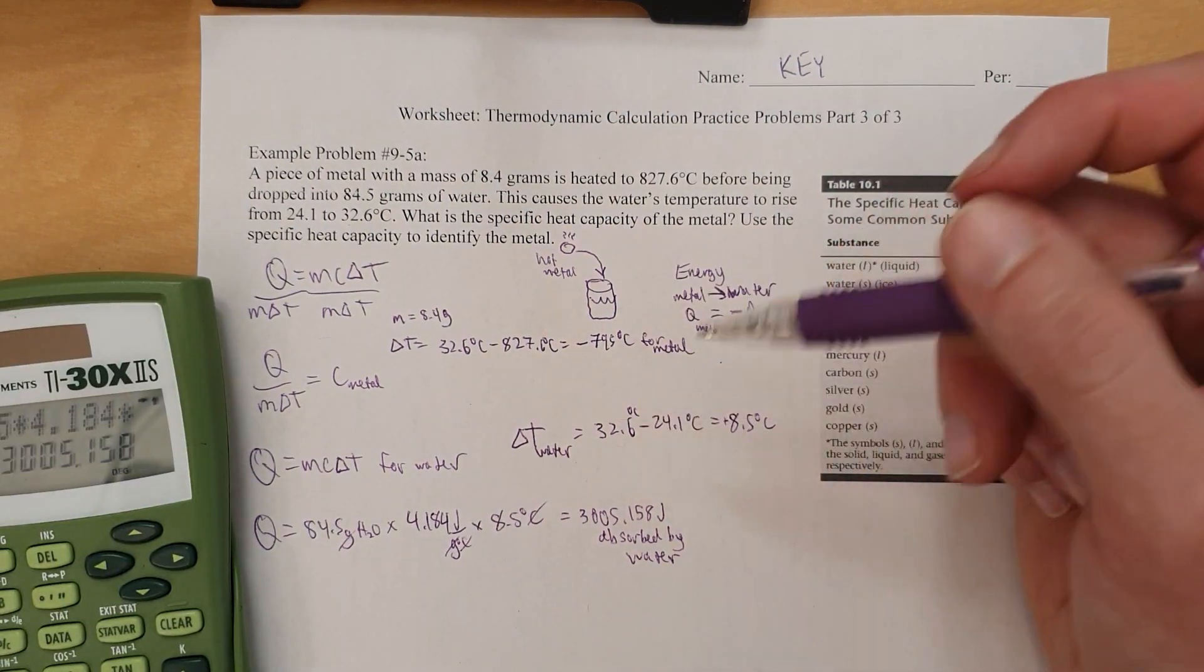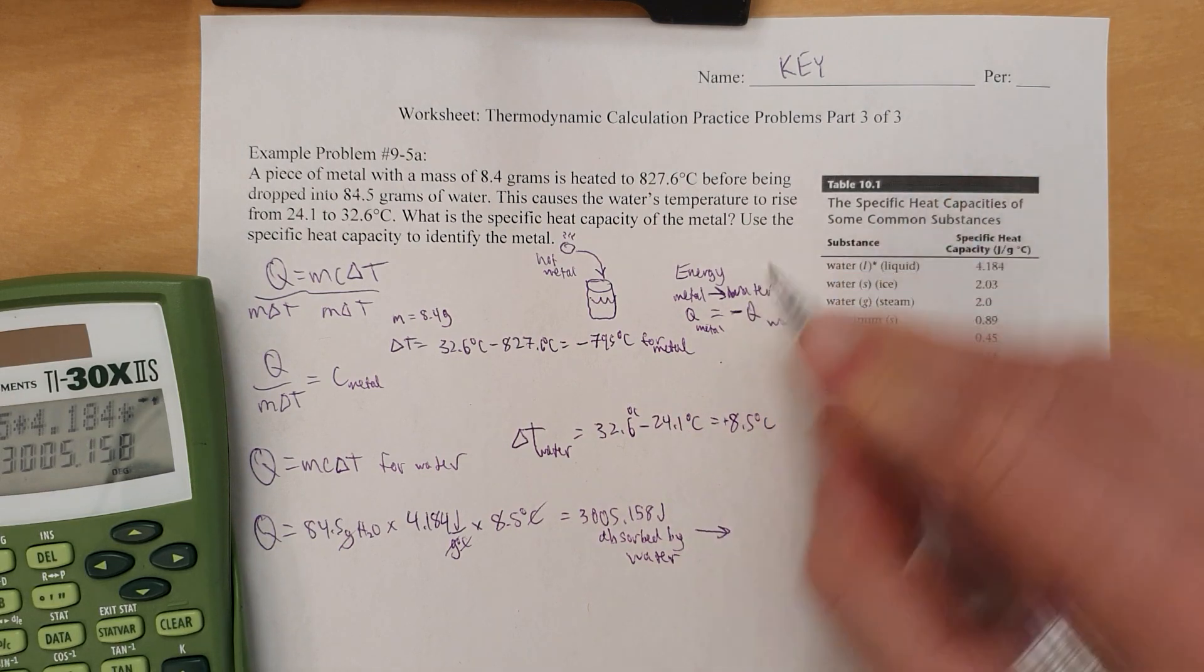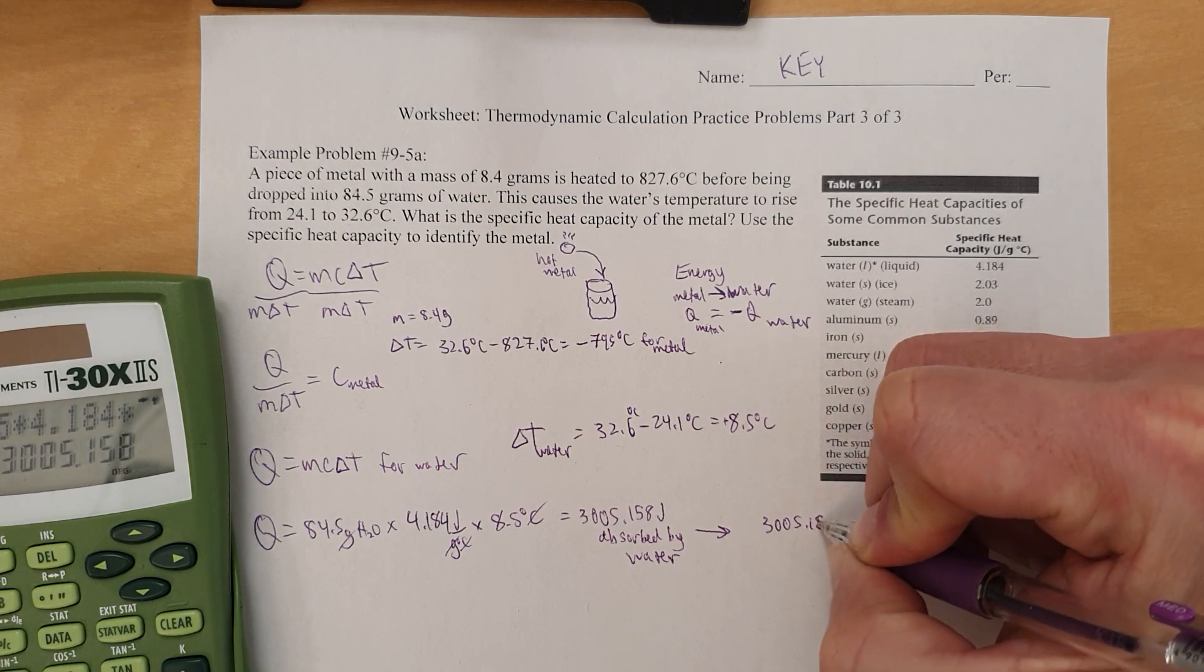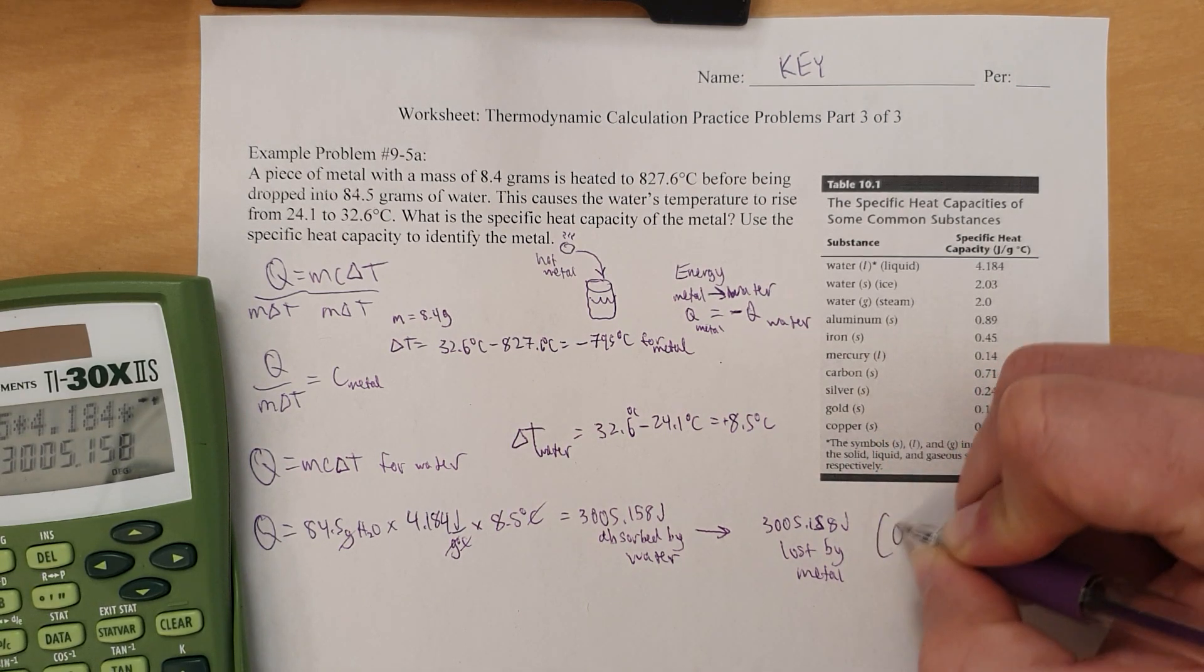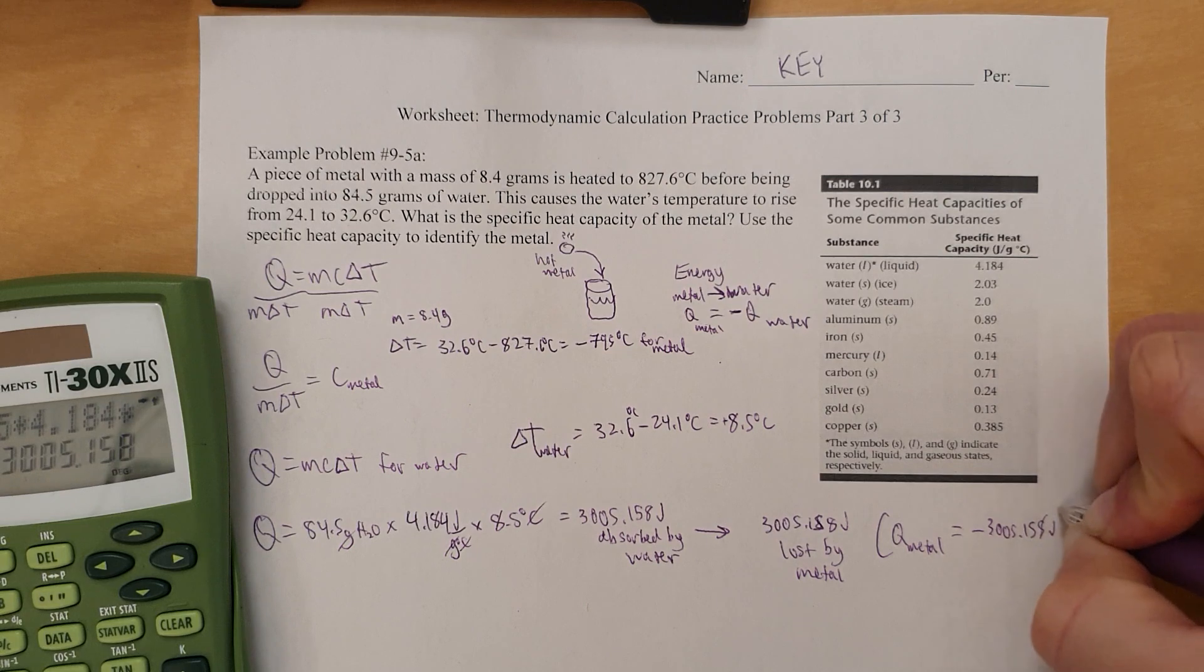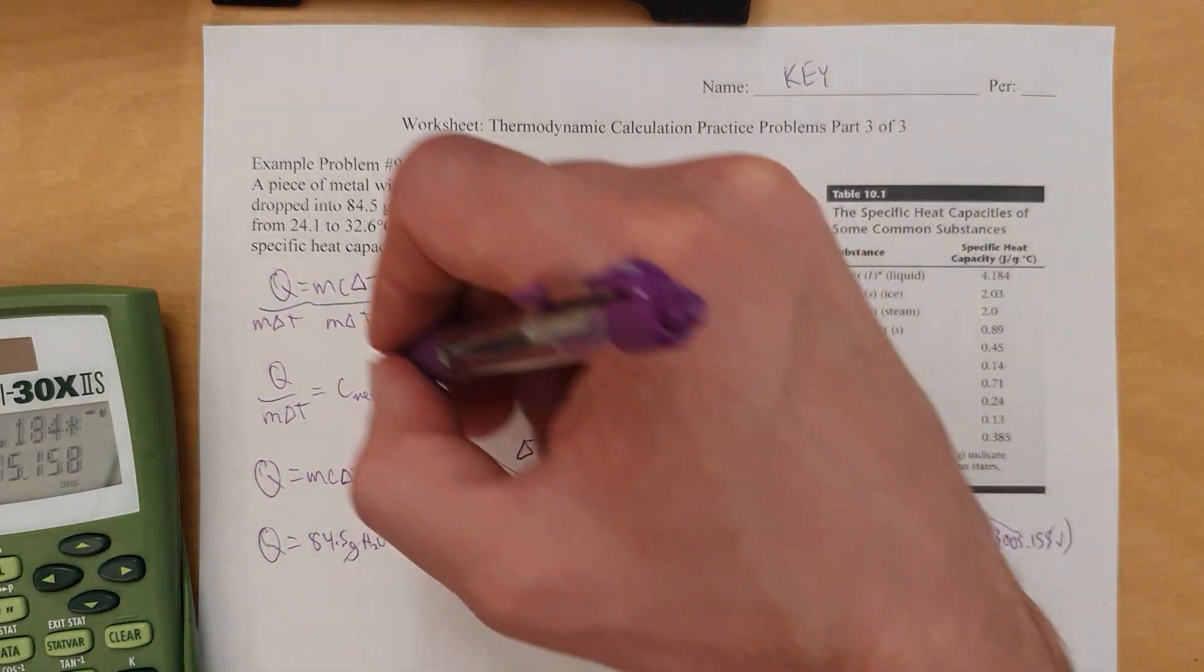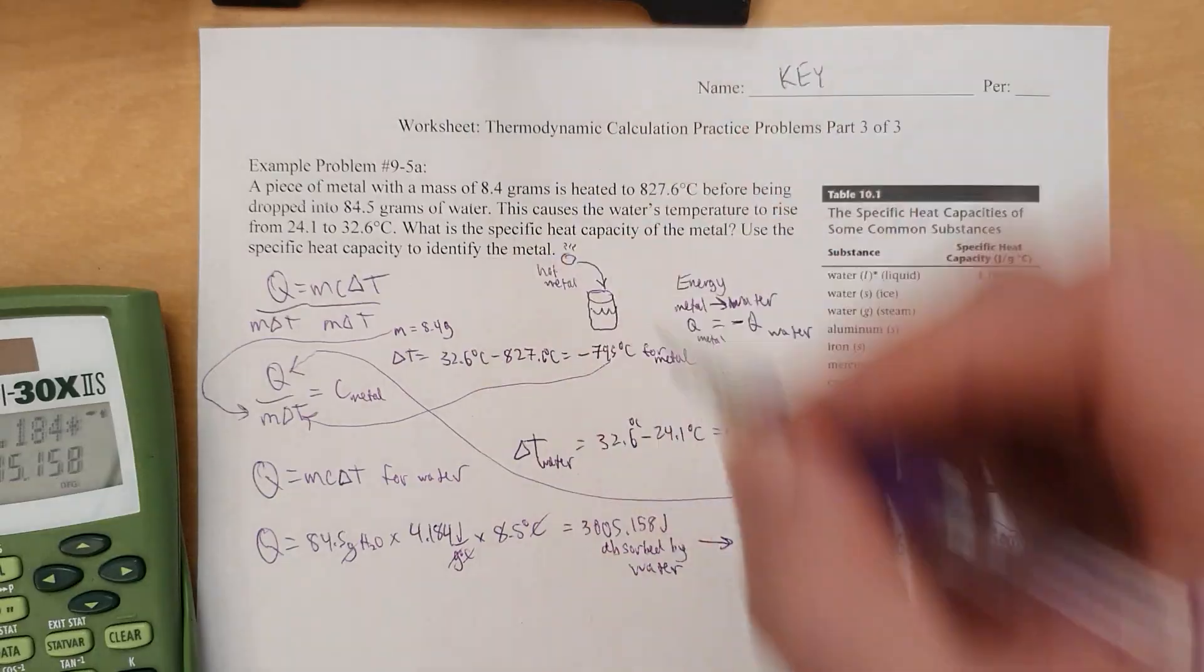Now, we need to understand that if this many joules is absorbed by the water, then the exact same number of joules must have been lost by the reaction, by the metal. So, the only way the water gained this many joules is because 3,005.158 joules was lost by metal, which means we're going to say Q metal is negative. Negative 3,005.158 joules. Notice it's unrounded because this isn't the final answer. Don't round until the end. I will, however, now be able to take this number and put it into this equation right here. And then this goes here, and this goes here.